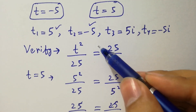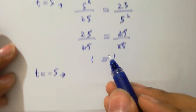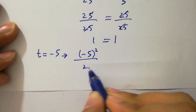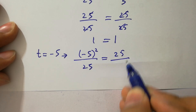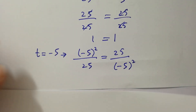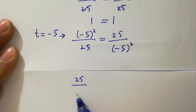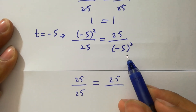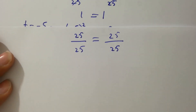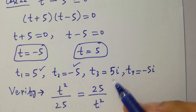Now take t equal to minus 5. We have minus 5 squared over 25 equal to 25 over minus 5 squared. A negative times a negative gives a positive: 5 times 5 is 25 over 25 equal to 25 over 25. Again 1 equals 1, so left hand side equals right hand side.